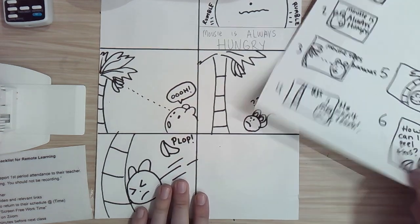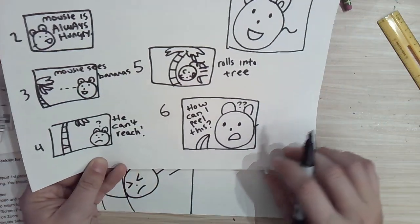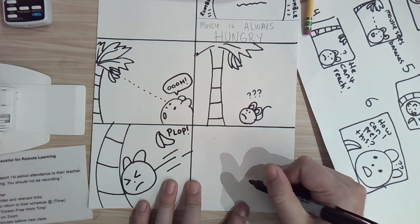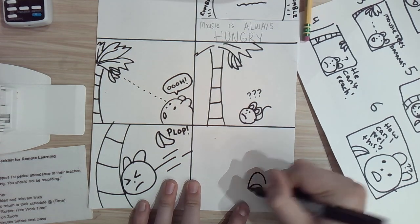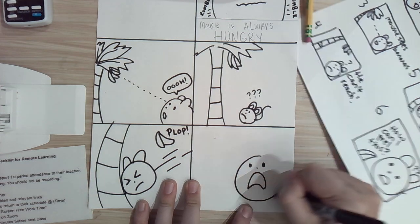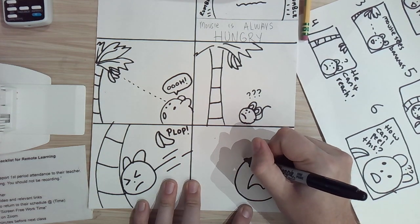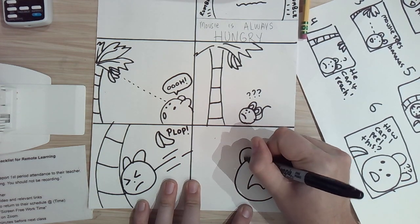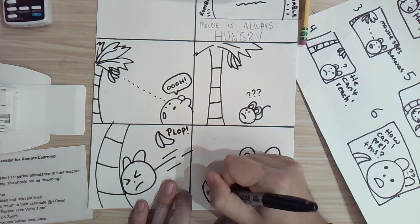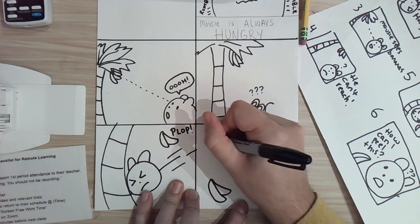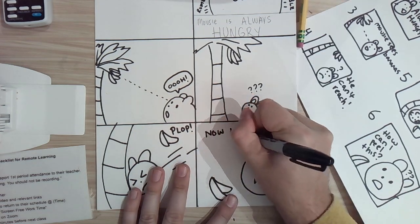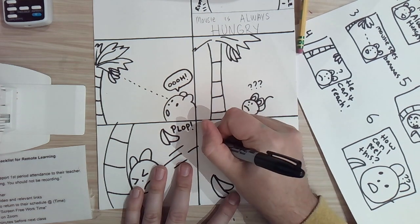And in the last panel, he cannot peel his bananas. So, I'm going to have him look either confused or sad. He's frustrated because he did all that work. And I have him write, now, how should, oops,